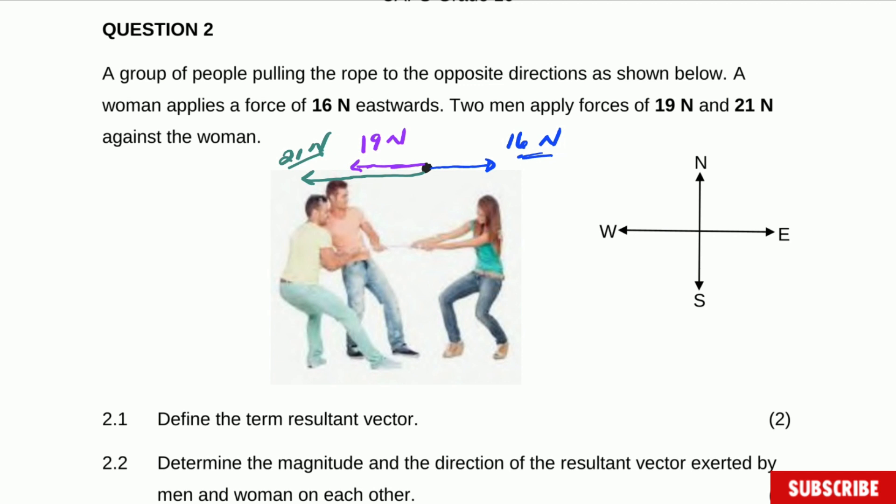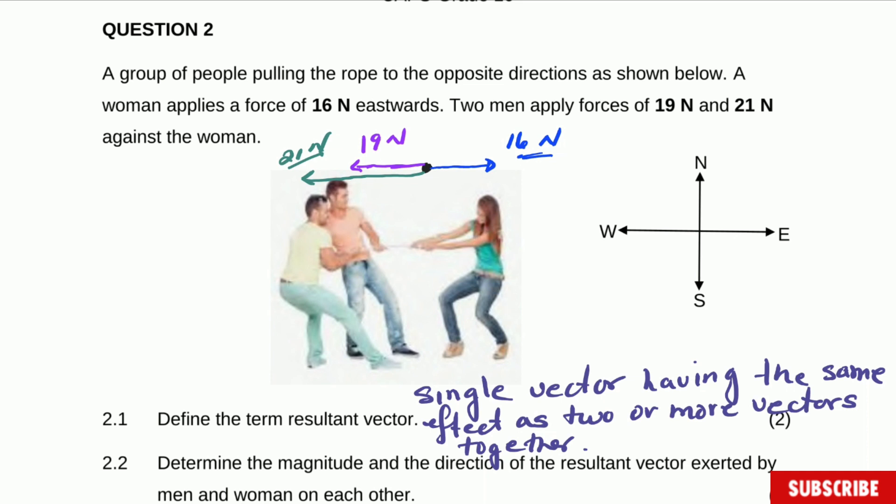Define the term resultant vector. And this definition is a resultant vector is a single vector having the same effect as two or more vectors together. Now that question guys is 99% probability of being in the exam. That definition of resultant vector. Single vector with the same effect as two or more vectors together.